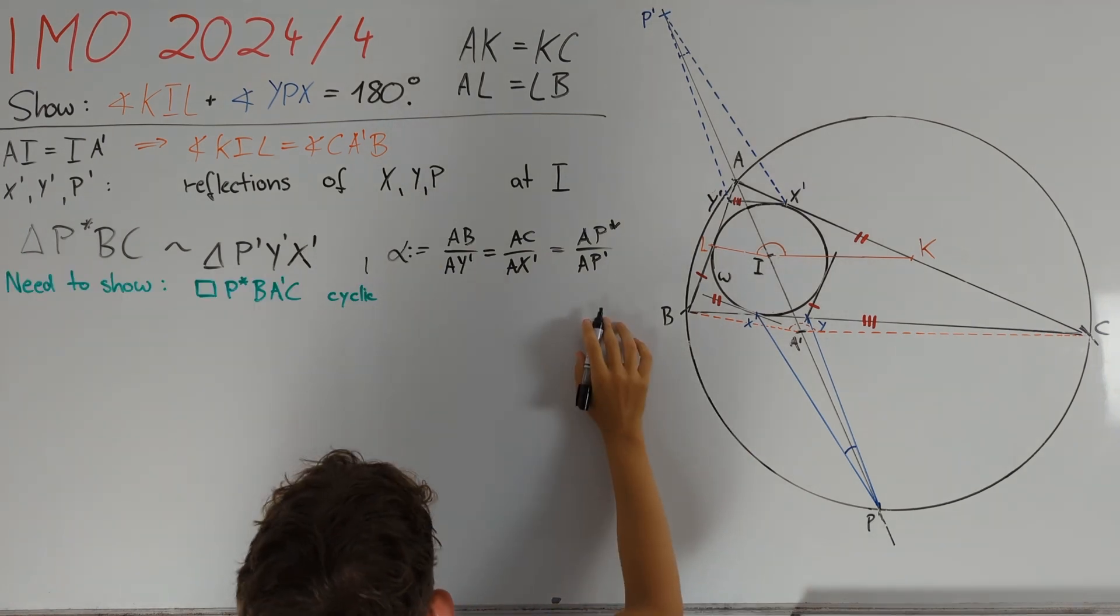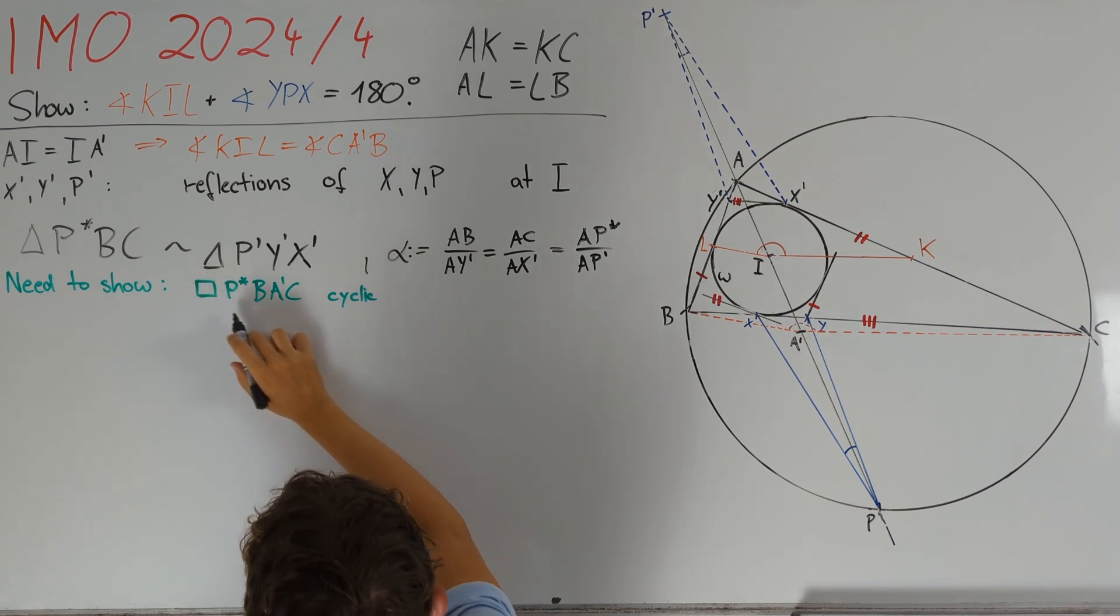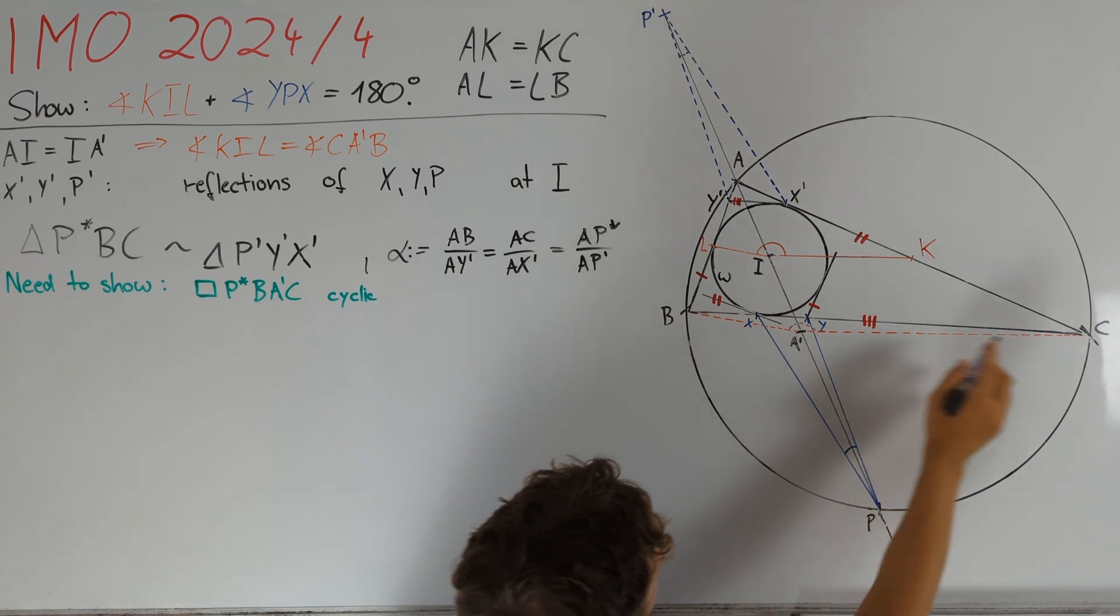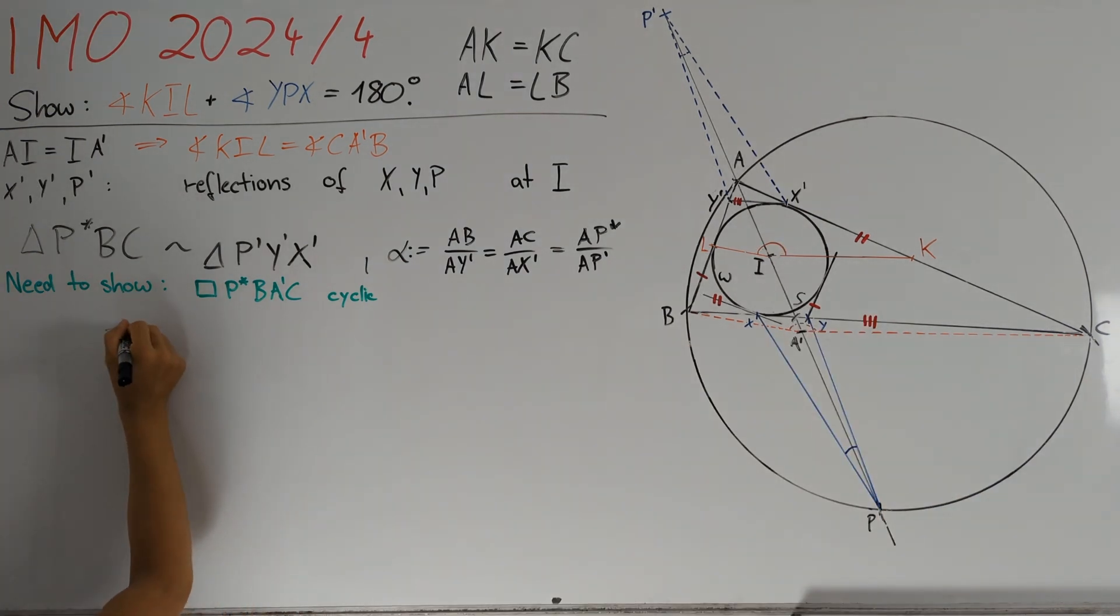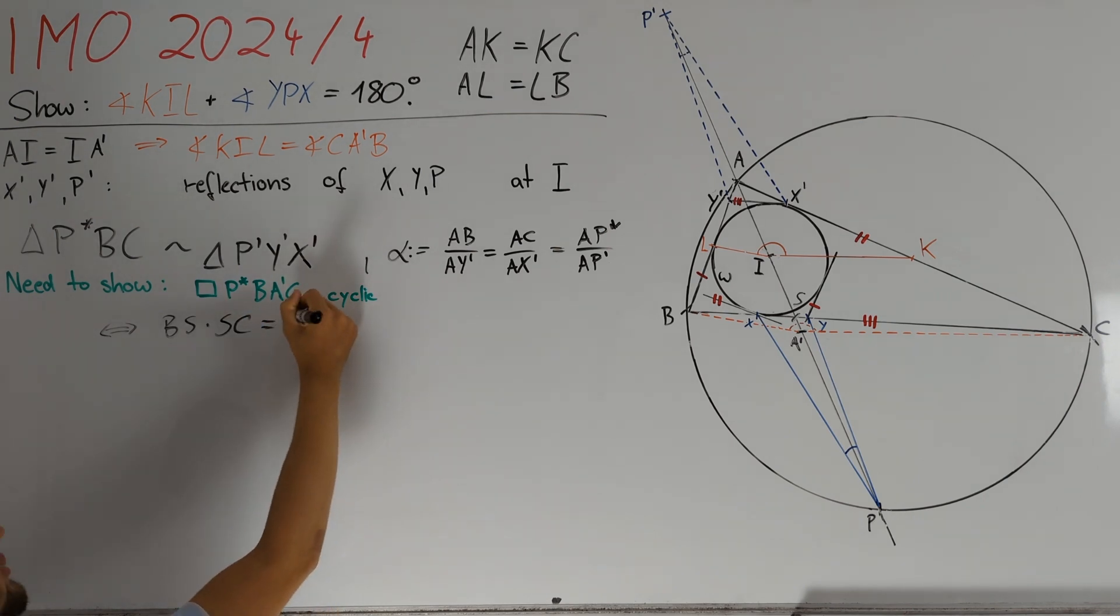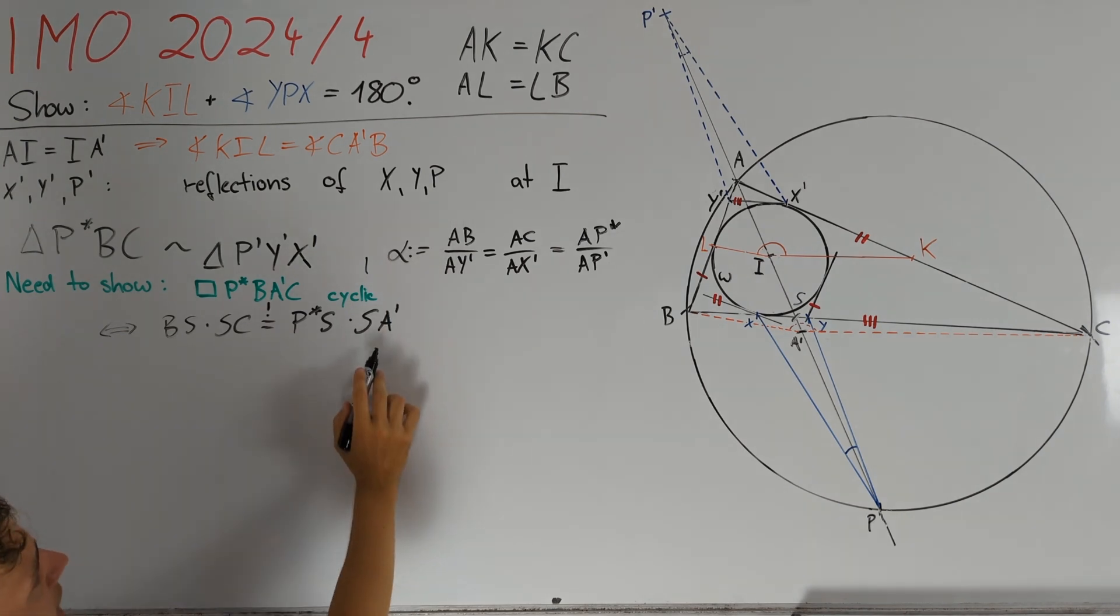Since we know something about distances, we want to use power of a point to prove this. Therefore, we consider the intersection of diagonals of this quadrilateral, which is the intersection S of BC and AI. So, by power of a point, our claim, or what we need to show, is equivalent to BS times SC equal to P star S times SA'.